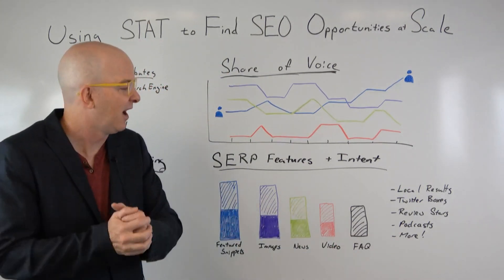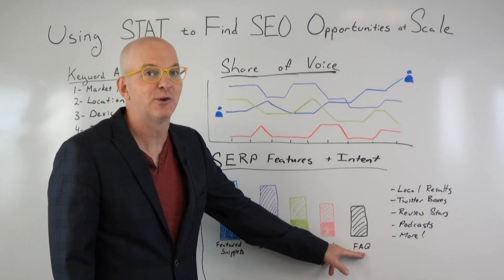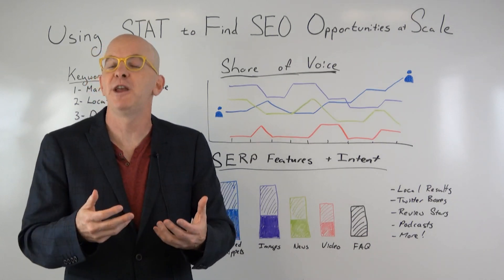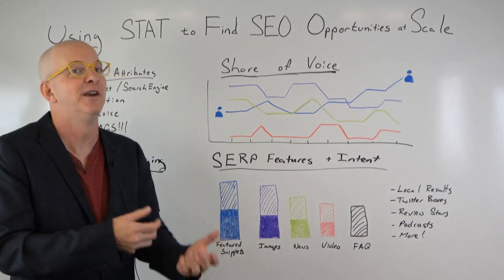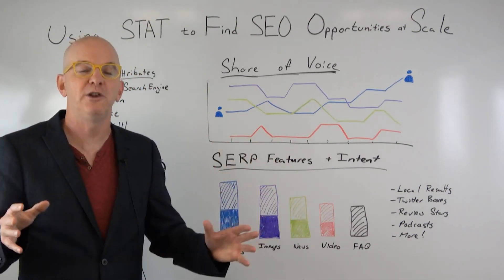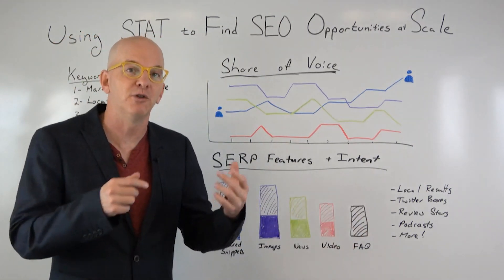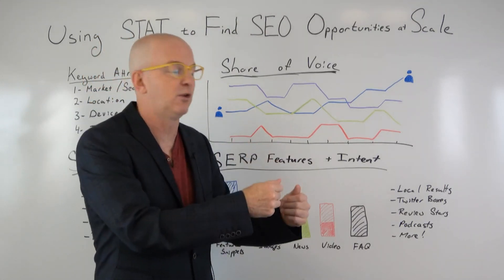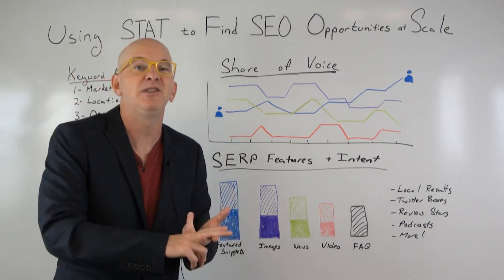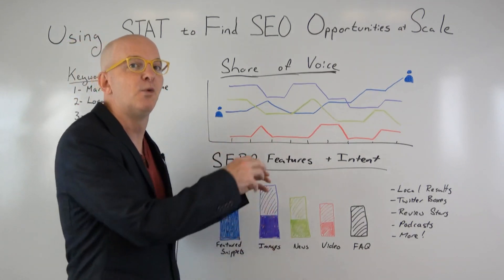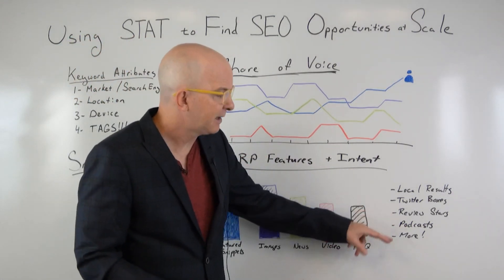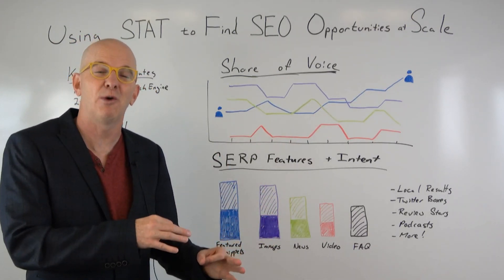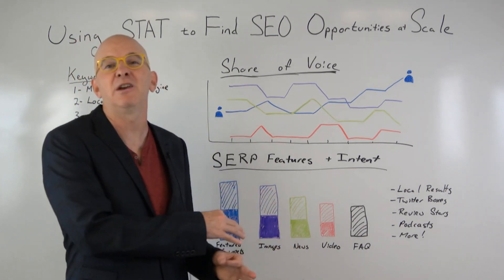FAQs are another thing — rich snippet results. You may find your competitors are all using FAQ markup and you're not, which could inform your SEO strategy to start incorporating more FAQs since Google is rewarding those in the SERPs. Other features: virtually any trackable SERP feature — local results, Twitter boxes. You may find that for certain queries Google is surfacing Twitter results, meaning you need to be more active on Twitter and see who's ranking there rather than relying on on-site content. Maybe you need to do more YouTube — it's not all necessarily on your site, but this will tell you where to invest. Review stars, podcasts, and more — all of this tells you what's important, where the opportunities are, where you're winning and losing, and the exact features where competitors are getting traffic and you aren't.